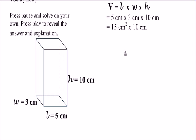When you multiply the 5 and the 3, you get 15 centimeters squared. And you multiply that by the 10 centimeters, and you get 150 centimeters cubed.